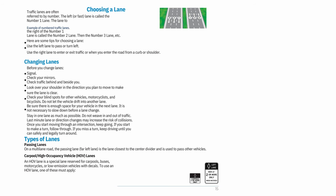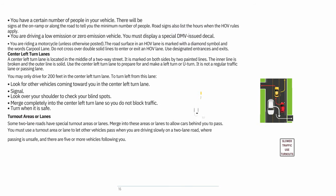To use an HOV lane, one of these must apply: you have a certain number of people in your vehicle (signs at the on-ramp or along the road will tell you the minimum number, and also list hours when HOV rules apply); you are driving a low-emission or zero-emission vehicle and display a special DMV-issued decal; or you are riding a motorcycle. Unless otherwise posted, the road surface in an HOV lane is marked with a diamond symbol and the words 'carpool lane.' Do not cross double-solid lines to enter or exit — use designated entrances and exits.